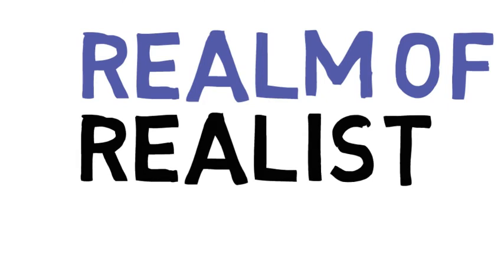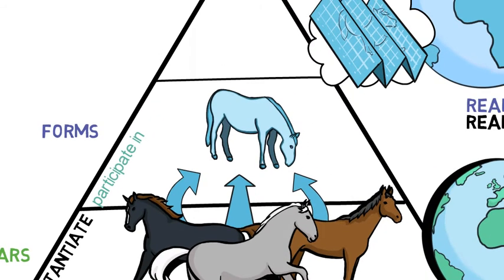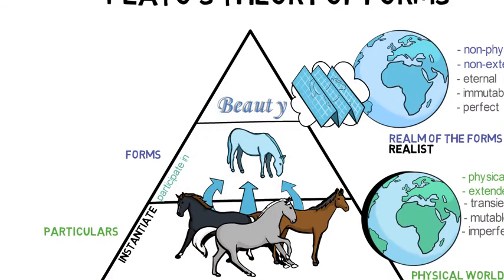One particular can instantiate many different forms. So for example, one horse, one particular horse, could instantiate the form of horse, the form of beauty, the form of black, and so on.